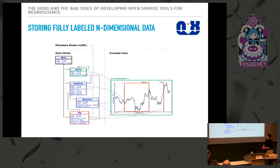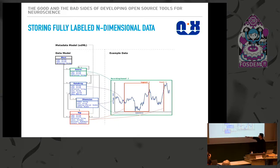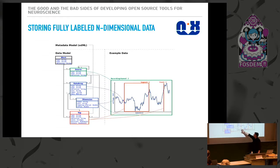This is a part of the data model behind NIX. The key element is what we call the data array — it stores the information, what is in there, the unit of that data, and of course the data itself. Then we have dimension descriptors that describe the time axis or anything else. We can have entities called tags that allow us to tag regions or points in this data.